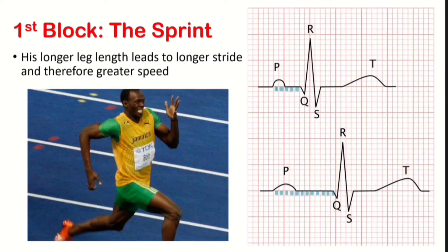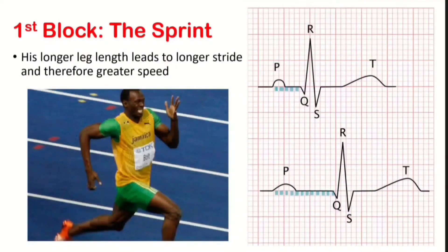Our first block in the Olympics will be the sprint, as you can see by this image of Usain Bolt. His longer leg length allows for a longer stride, and therefore greater speed.